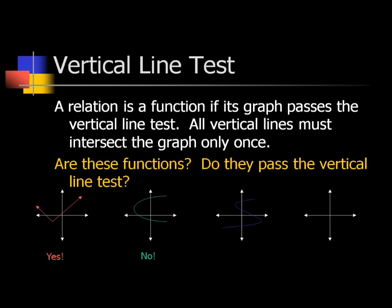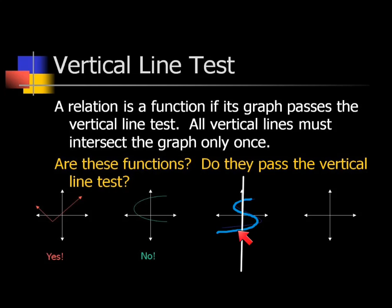Next one. Is it a function or not a function? Not a function — because if you draw a vertical line anywhere, this one touches three times: once there, once there, and once there. That x-value — looks like x is zero — has three different y-values. All you have to do is draw a vertical line; if it touches twice, it's not a function.